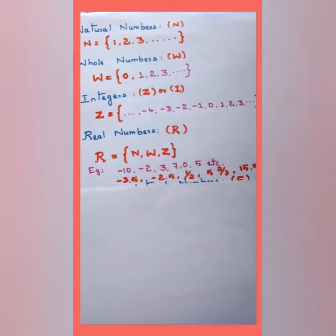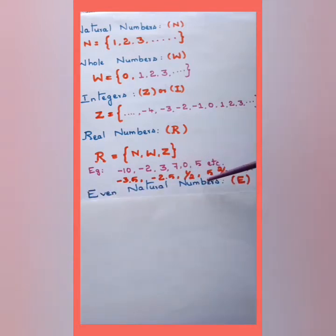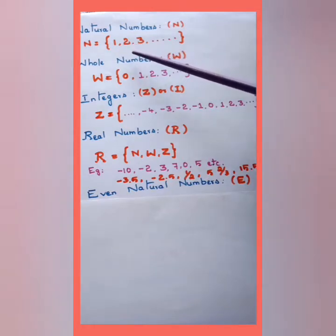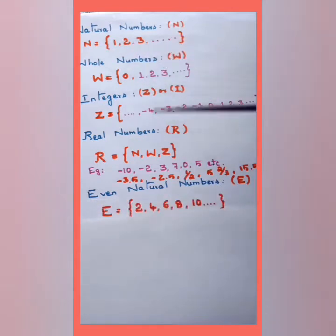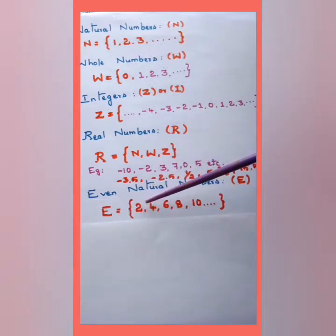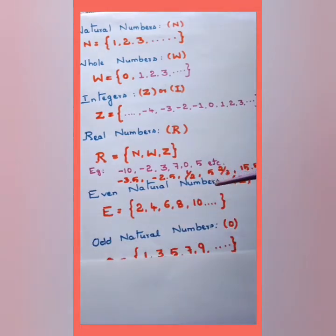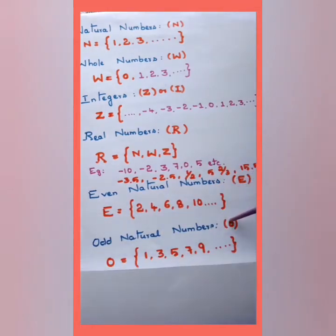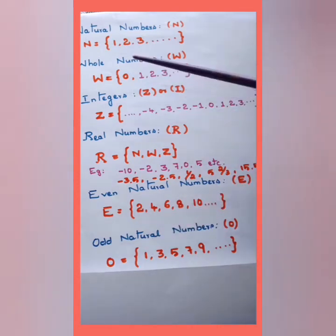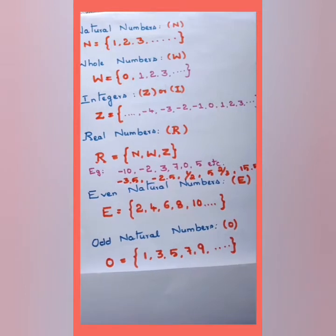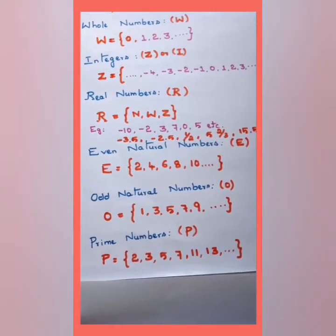Next we'll look at even and odd natural numbers. Even natural numbers are the even numbers from the natural numbers: 2, 4, 6, 8, 10, etc. Odd natural numbers, represented by the letter O, are the odd numbers from the natural numbers: 1, 3, 5, 7, 9, etc.